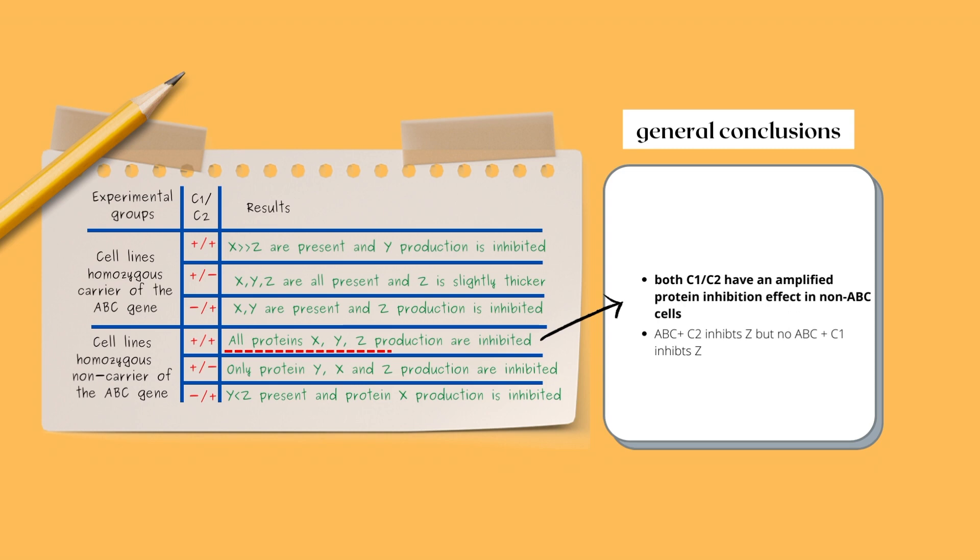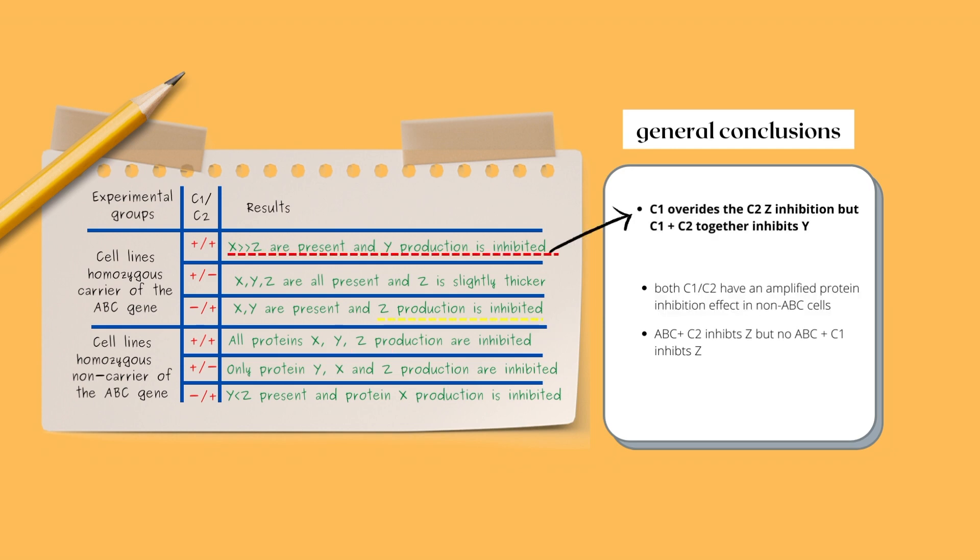Here are some other patterns I've noticed. When we add both chemicals, C1 and C2, to a non-ABC gene, there's the complete inhibition of all proteins. Another remark that I saw or pattern is ABC cells with both chemicals added, we see that C1 overrides C2's inhibition of protein Z. But for some reason, when they're together, they all of a sudden inhibit protein Y. It's kind of interesting and something I wanted to note down.